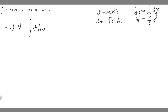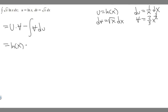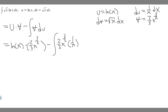Now that we have all the pieces, we can plug into the formula. That gives us ln(x) times 2/3 · x^(3/2), minus the integral of 2/3 · x^(3/2) times du, which is 1/x dx. We don't have to touch the first term since it's already solved out.